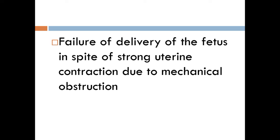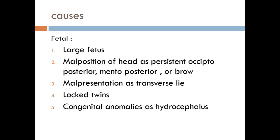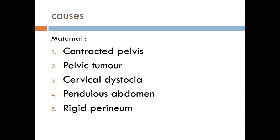The second topic for today is obstructed labor. Definition: it is failure of delivery of the fetus in spite of strong uterine contractions due to mechanical obstruction. Causes may be fetal or maternal. Fetal causes include large fetus, malposition of the fetal head such as persistent occipitoposterior, mentoposterior, or brow, malpresentation such as transverse lie, locked twins, and congenital abnormalities such as hydrocephalus. Maternal causes include contracted pelvis, pelvic tumor — either bony tumor, ovarian tumor, or large fibroid impacted in the pouch of Douglas — cervical dystocia, pendulous abdomen, and rigid perineum.